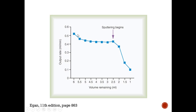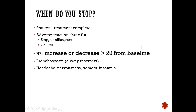A chart shows that once sputtering begins and you reach the residual volume area, aerosol output drops drastically. Sometimes there appears to be a decent amount of fluid left in the cup, which can be misleading. Let it run briefly after sputtering starts, but output goes way down once you've hit that dead volume.